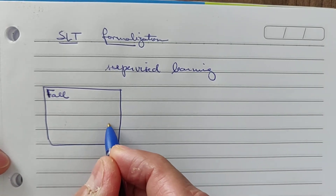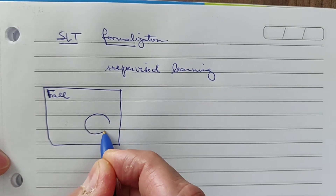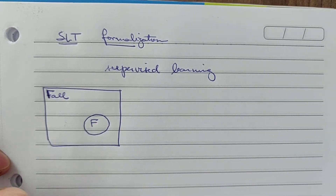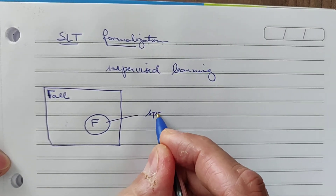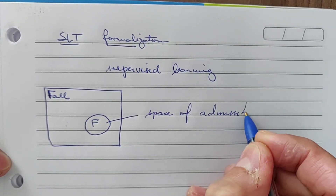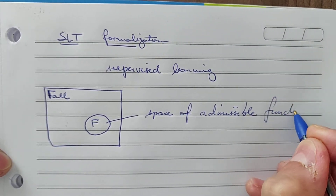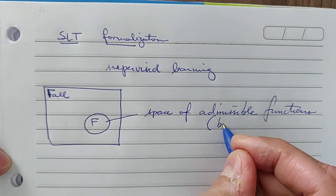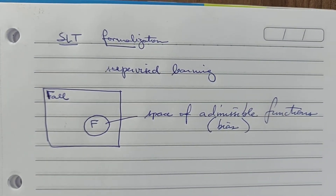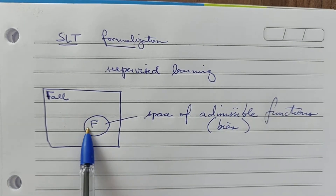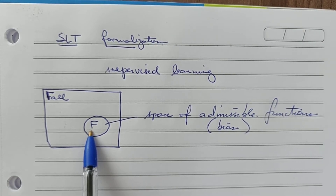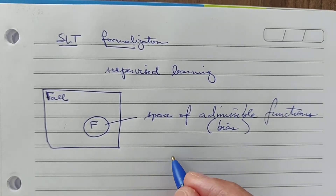When I define a given supervised learning algorithm, I define a bias — a bias F. So this is the space of admissible functions, also known as bias. The basic idea is that inside this space, I have all functions my algorithm is capable of representing. For example, let's suppose the perceptron.